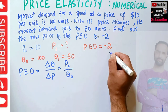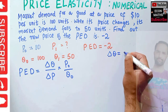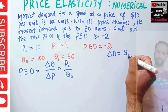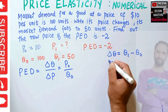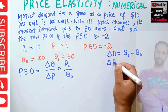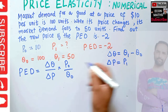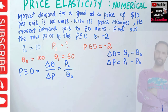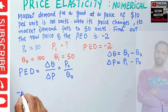Change in quantity is equal to new quantity Q1 minus initial quantity Q naught. Change in price is new price P1 minus the initial price P naught. Having said that, price elasticity of demand is minus 2, so in this place we write minus 2.